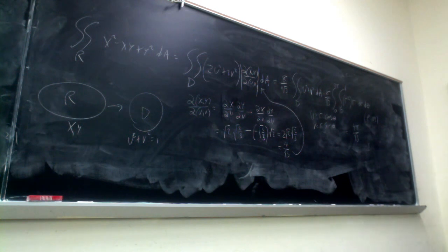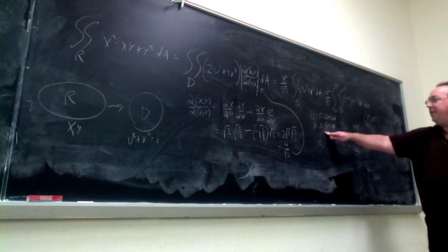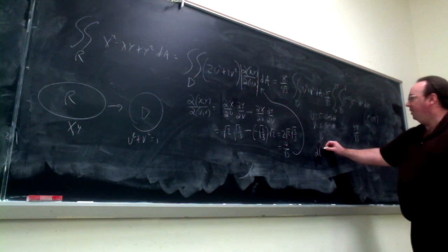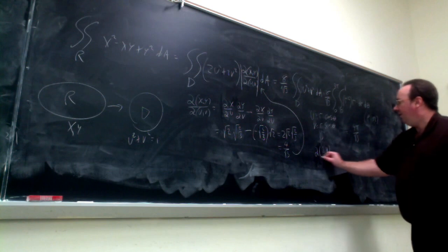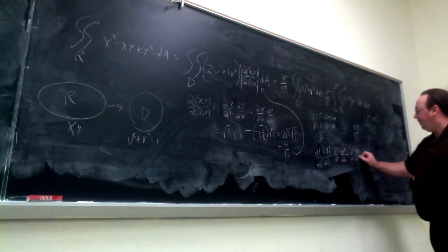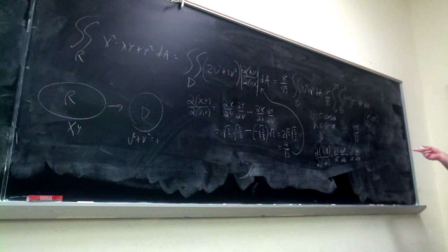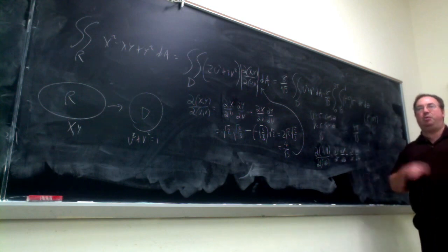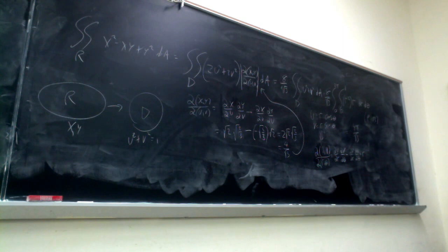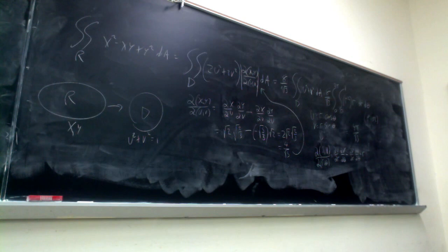A student asks how to find the second Jacobian. If you didn't already know it should be r, you'd compute: J(u,v; r,θ) = (∂u/∂r)(∂v/∂θ) − (∂v/∂r)(∂u/∂θ), which simplifies using cos²θ + sin²θ = 1 to give r. It's best just to know the standard Jacobians: r for polar and cylindrical coordinates, and ρ²·sinφ for spherical coordinates.